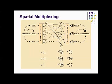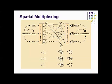In spatial diversity there is no increase in the data rate, but this can be achieved using spatial multiplexing, because here the data is divided into different streams and these streams are transmitted independently via separate antennas. If these signals arrive at the receiving end with sufficiently different spatial signatures, the receiver can separate these streams into parallel channels, thus increasing the data throughput capability.